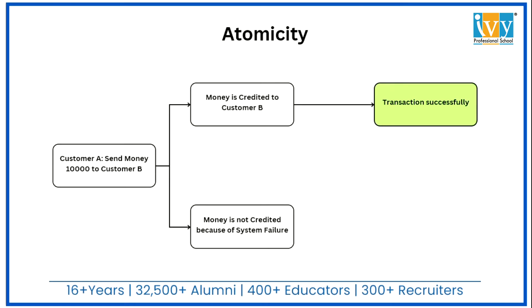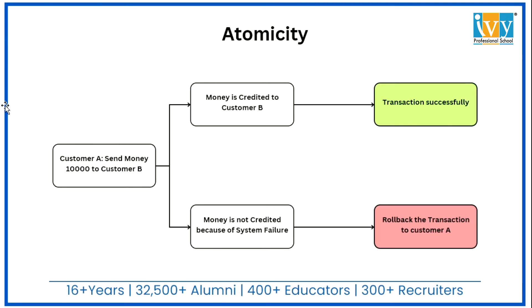But if there is a system failure or error during the transaction, the money is not debited from the customer's account and the system will roll back to its original state. This is what atomicity ensures — an all-or-nothing outcome for the transaction.